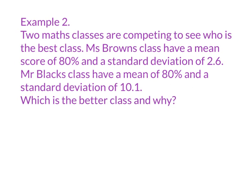Example two: two maths classes are competing to see who is the best class. Miss Brown's class have a mean score of 80% and a standard deviation of 2.6. Mr Black's class has a mean of 80% and a standard deviation of 10.1. Which is the better class and why? You'll notice straight off — they both have the same mean score. So on paper, if I was just looking at the average score at the bottom of the spreadsheet, I'd say both those classes are as good as each other. But let's look at these again and get our sentence in.